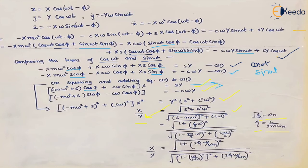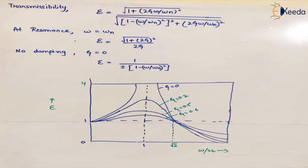The resulting equation for X/Y is the displacement transmissibility ε (epsilon), and this equation is the same as force transmissibility. At resonance, when ω = ωₙ, the transmissibility takes a specific large value; with no damping it becomes infinite. In general, transmissibility is defined as the ratio of the transmitted value to the applied value — whether it is force transmissibility, motion transmissibility, or displacement transmissibility, the formula is always transmitted value divided by applied value.